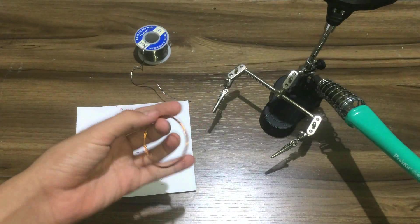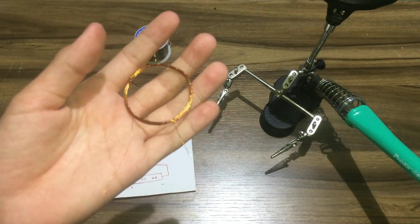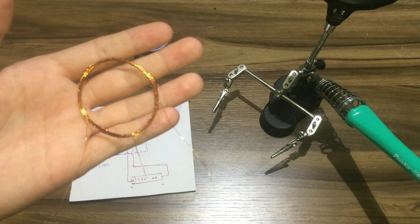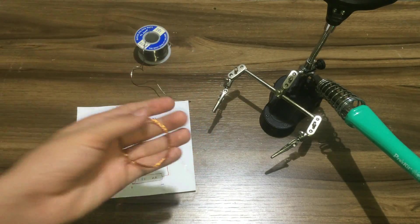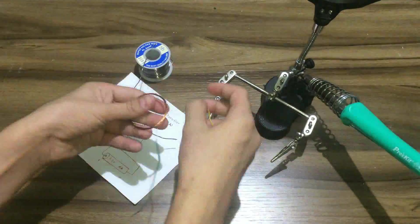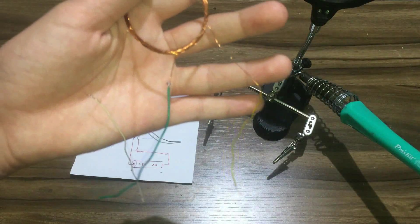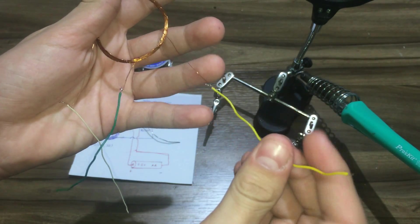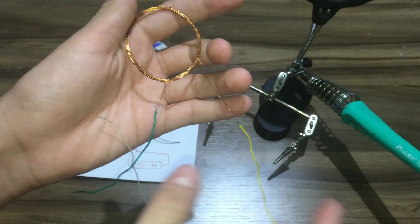After finishing the 3-pin coil, I will add 3 different color wires to it to make things easier. As you can see, I added 3 wires to the coil.